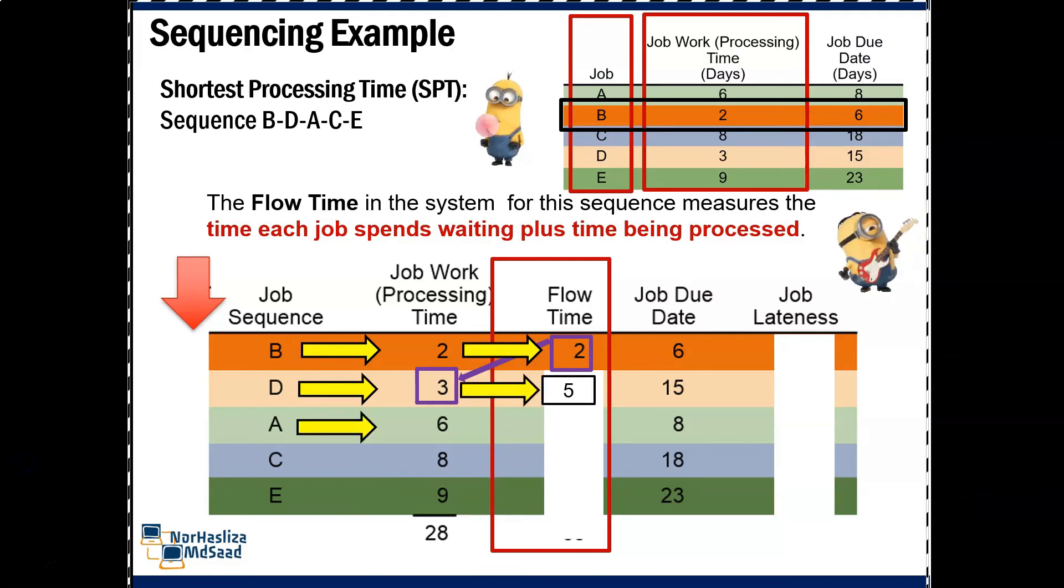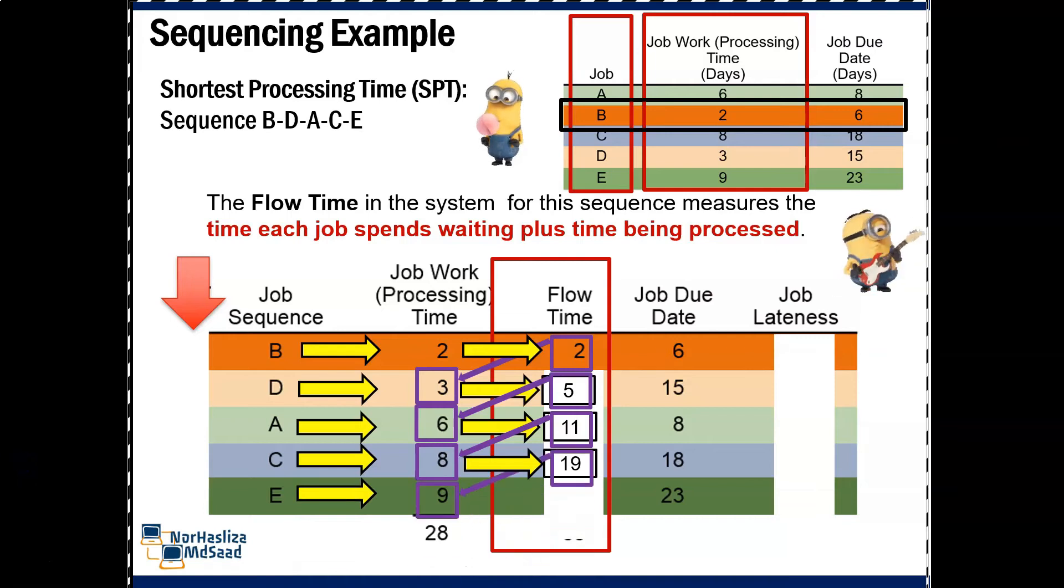For A, 5 plus 6, equal to 11. For C, 11 plus 8, equal to 19. Finally E, 19 plus 9, equal to 28. The total number of flow time is 65.